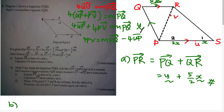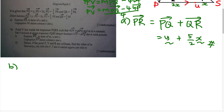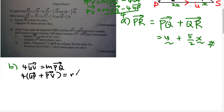Moving 4UP to the other side: 4PV = m·PQ − 4UP, then dividing by 4: PV = (m·PQ − 4UP) / 4. Now I check whether I have the information for UP and PQ from the diagram.